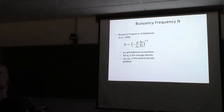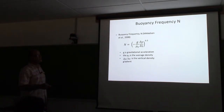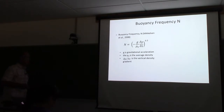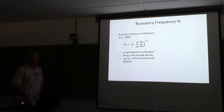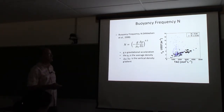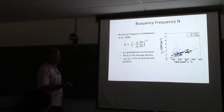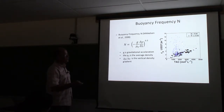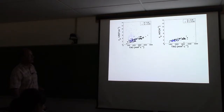The buoyancy frequency is a measure of stratification in the water column. It's gravitational acceleration over the fluid density times the density gradient, all raised to the power of 0.5 - so a big density gradient gives a big buoyancy frequency. Jing found that the anomalous points all had buoyancy frequencies greater than 0.05, meaning the points falling off the linear trend all showed up when there was strong stratification in the water column. She concluded that Schlieren was causing the effect.